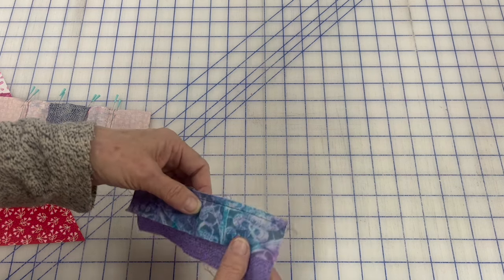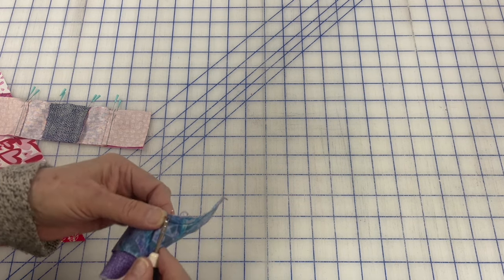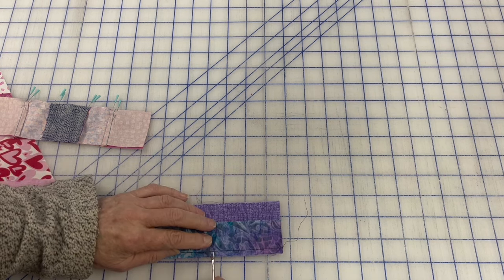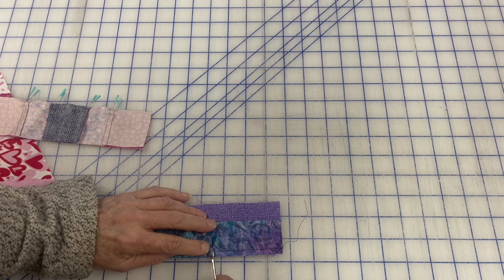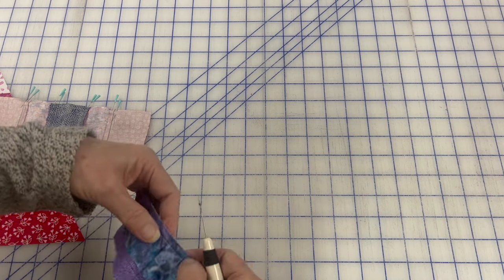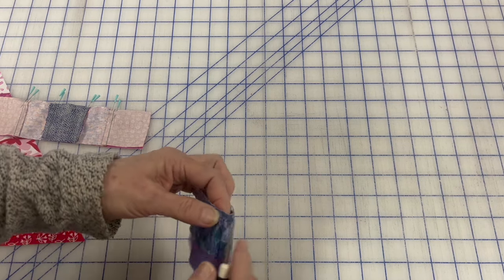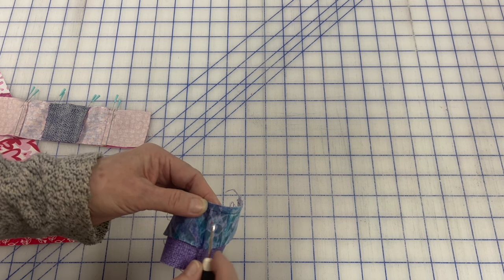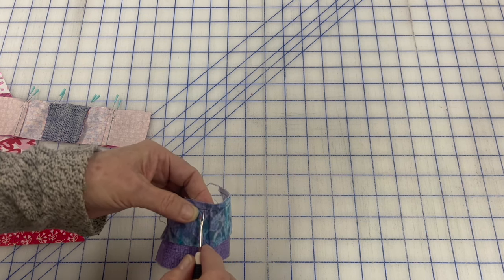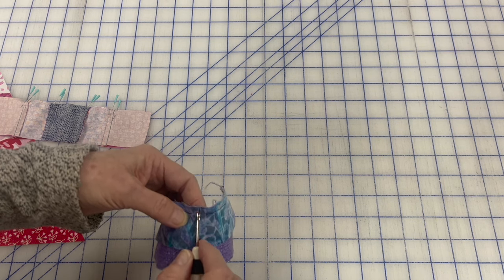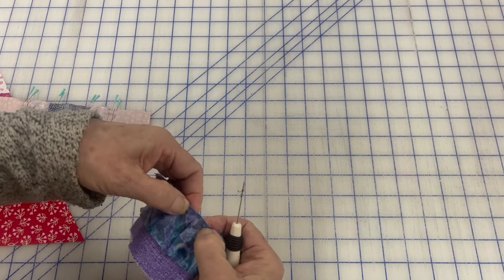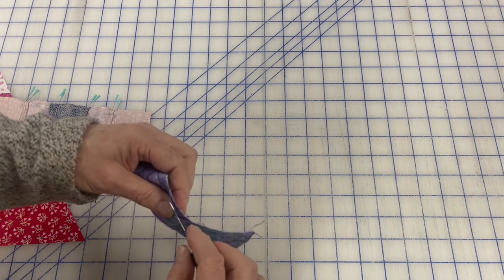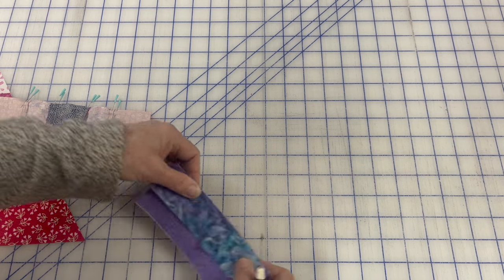So what you want to do is rip it. And then once you get the pleat released, of course we're doing it on camera and it's always easier off camera, right? Let me just get this open. And then what you want to do is distribute the bulk of that pleat so that there's no longer a pleat. I hope that makes sense. All right, so now my pleat's released. I think I want to rip just a little more because you want to distribute the bulk.